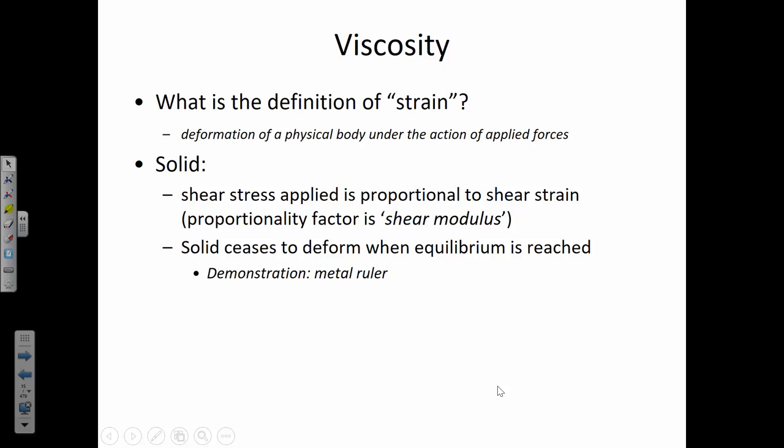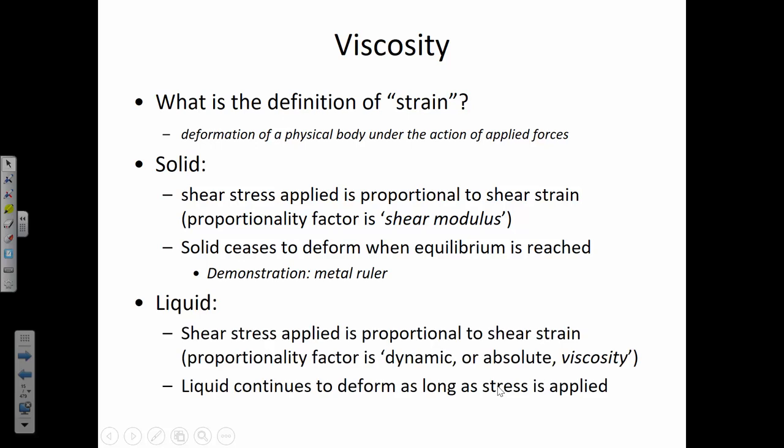Just by pushing on the ends, you can see the ruler deforms. One of the differences between a solid and a liquid is that in the case of a solid, the deformation ceases when you reach equilibrium — it's not continuing to change shape. In the case of a liquid, when you apply a shear stress, there is a factor that relates the stress and the strain, and that proportionality factor is the viscosity. Whereas for a solid, shear modulus describes how much deformation there will be when you apply a force.